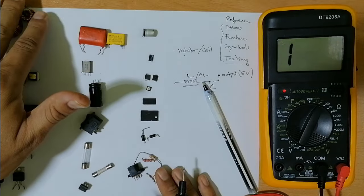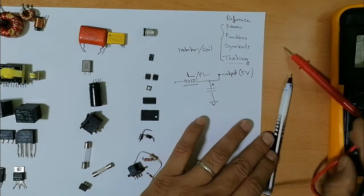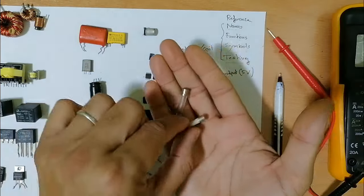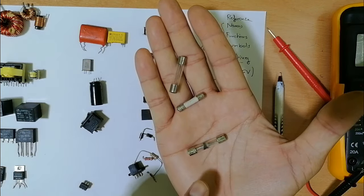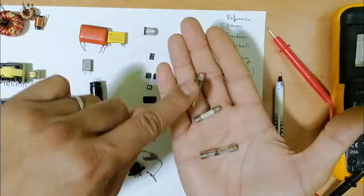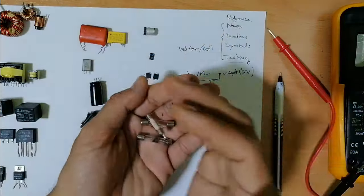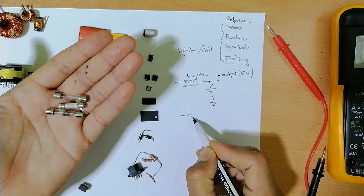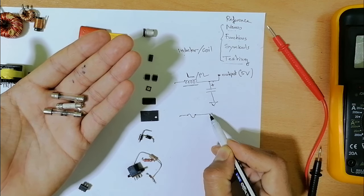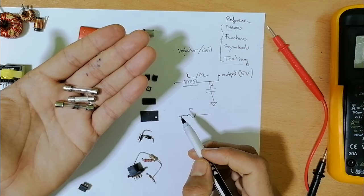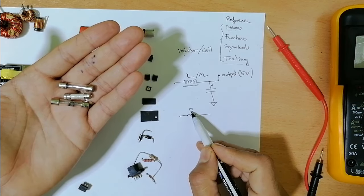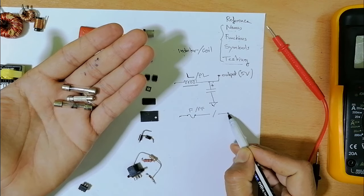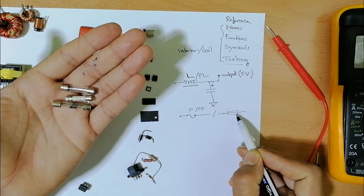Now let's look at the fuse. Here we have two fuses and one burned fuse. The name is fuse, and its reference is F, or sometimes PF. You can find the fuse symbol like this, or also a symbol similar to a resistor.